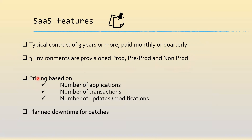How is the pricing structured? It depends on the kind of application. For example, if it's an origination application for loan originations, it's based on the number of applications. If it is a DDA or account-based application, it could be based on the number of transactions hitting the account. Or if it is a limits module, it could be based on the number of updates and modifications to the facility.